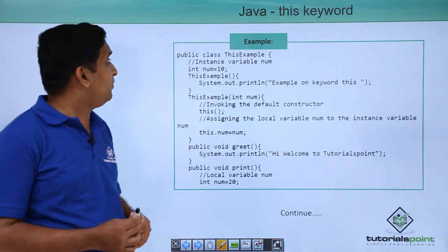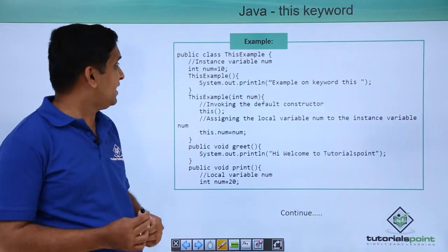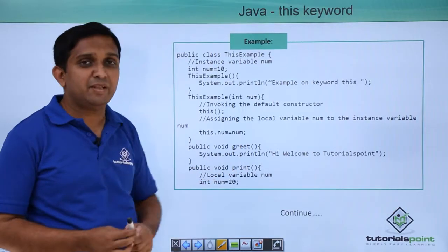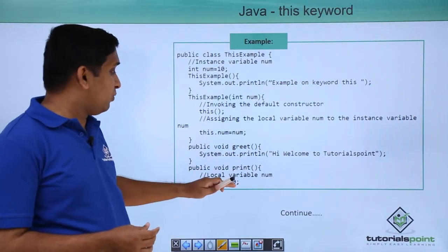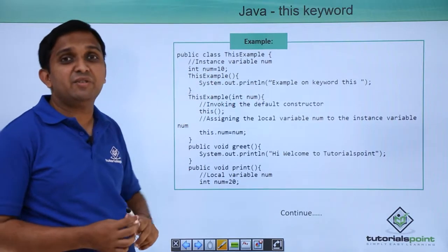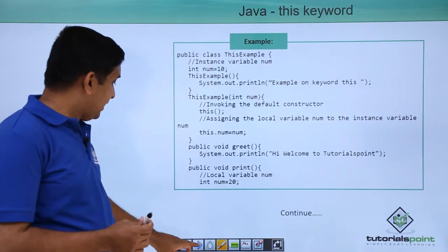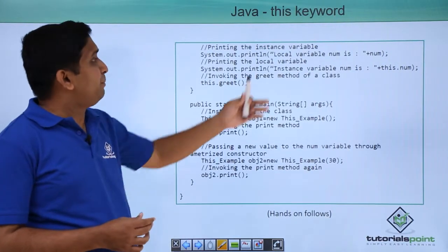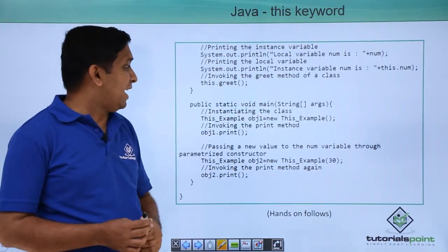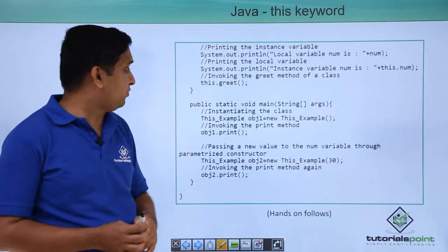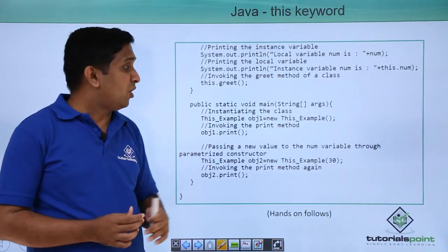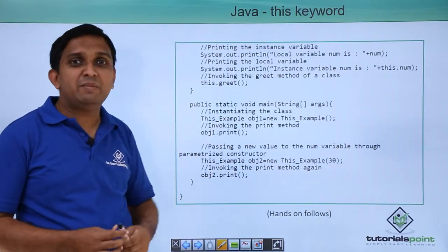In this slide one more example is shown where there is one class called ThisExample. It has one default constructor and one parameterized constructor. There are two methods: a greet method and a print method. In the print method, one variable is there with the same name as the instance variable 'num'. Here I am printing the value of 'num' (local variable) and 'this.num' (instance variable). In the main method I am creating two different objects of ThisExample class and calling the print method.